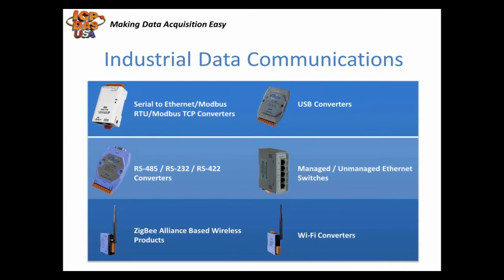Industrial data communication solutions can help with interoperability of systems, as you can convert data from one network to communicate with another through protocol gateways and converters. You can also extend signals and join networks with switches, repeaters, and termination resistors. We carry Serial, Modbus, Profibus, Ethernet IP, HART, DeviceNet, CAN, and many other kinds of converters. We also provide DIN rail mountable Ethernet switches as well as ZigBee and Wi-Fi wireless products.